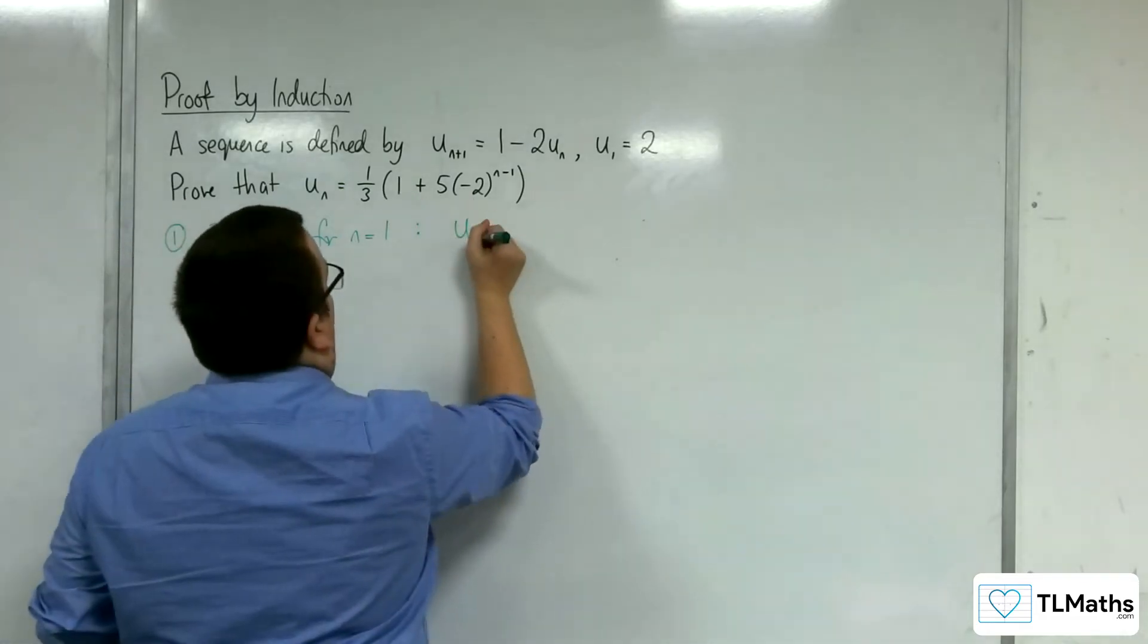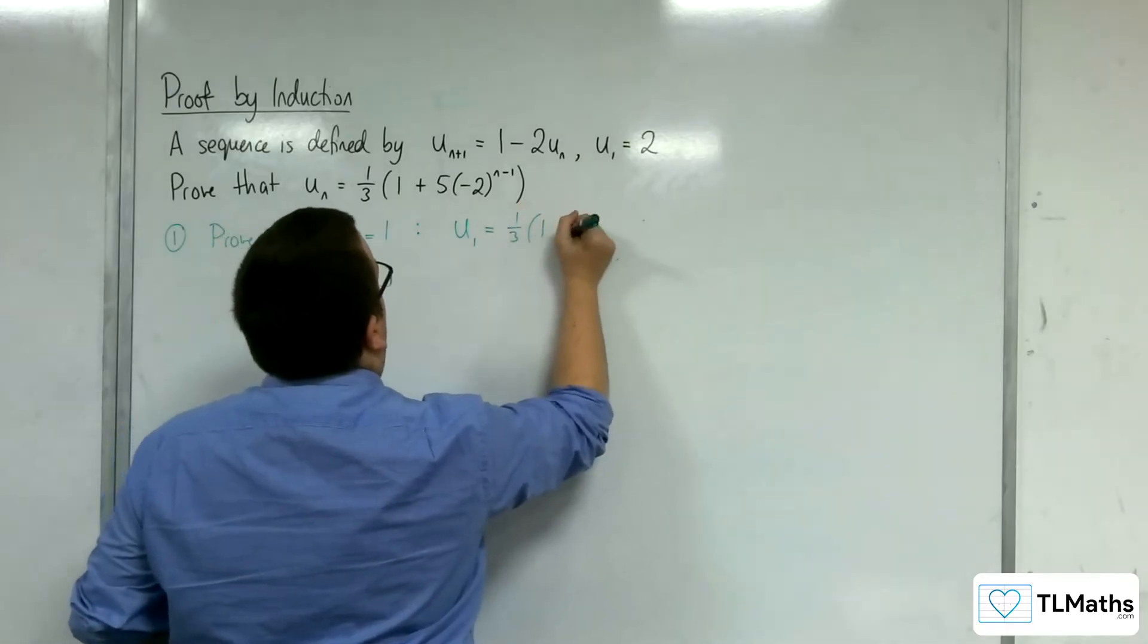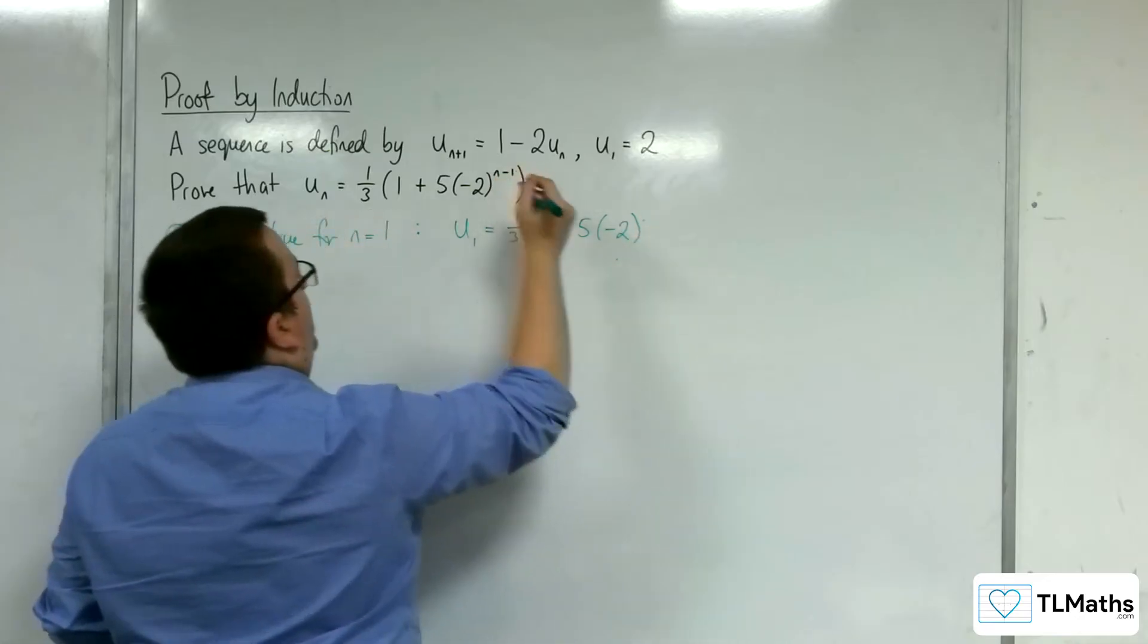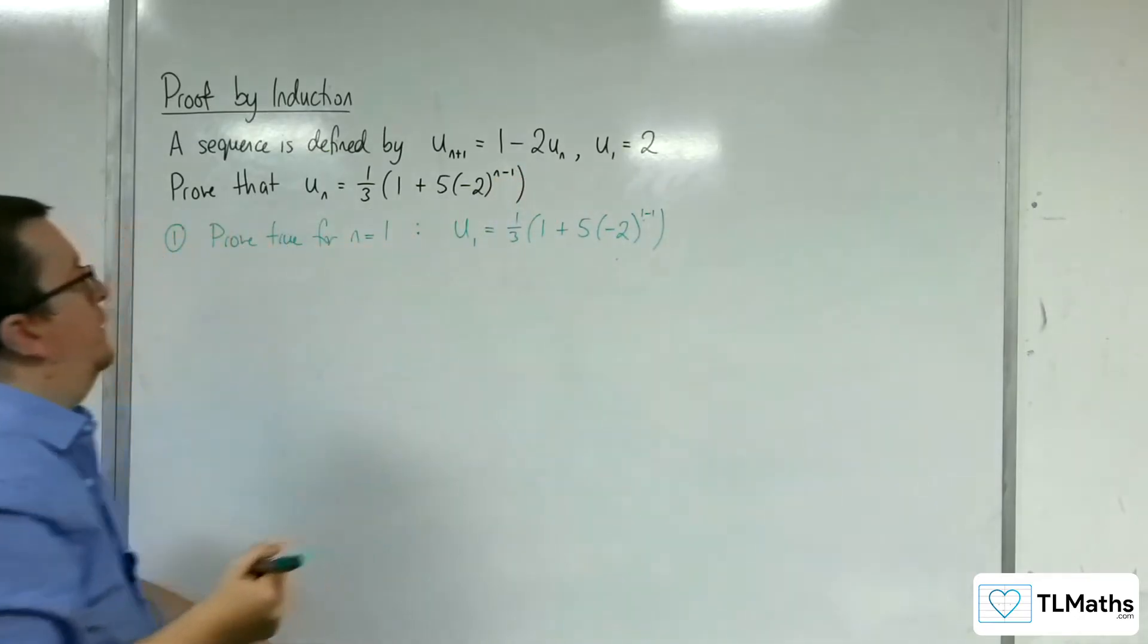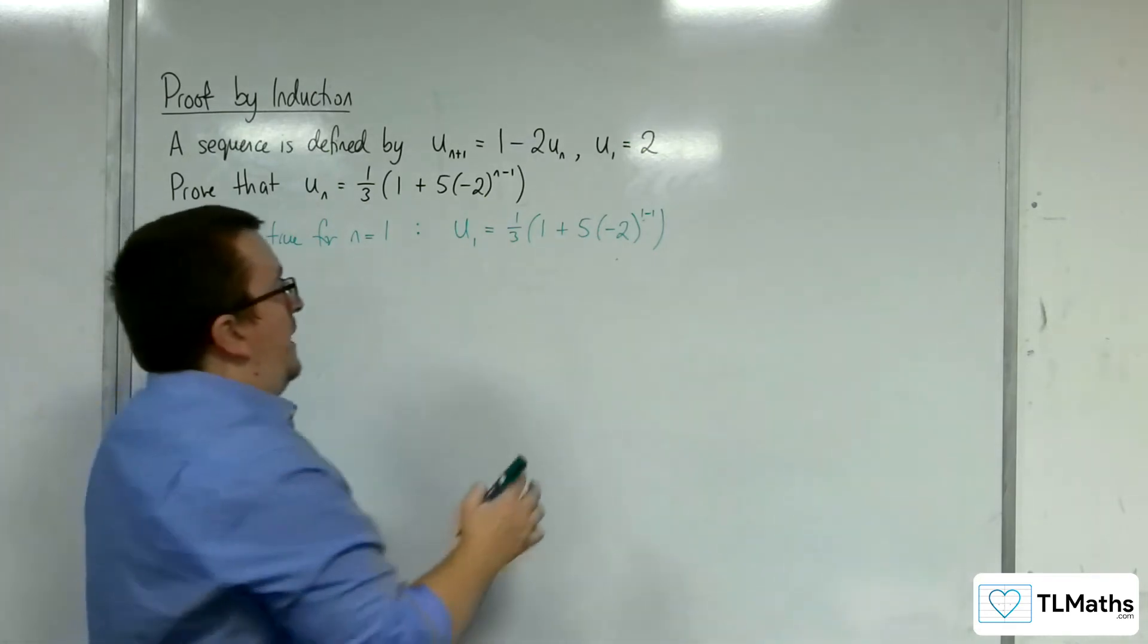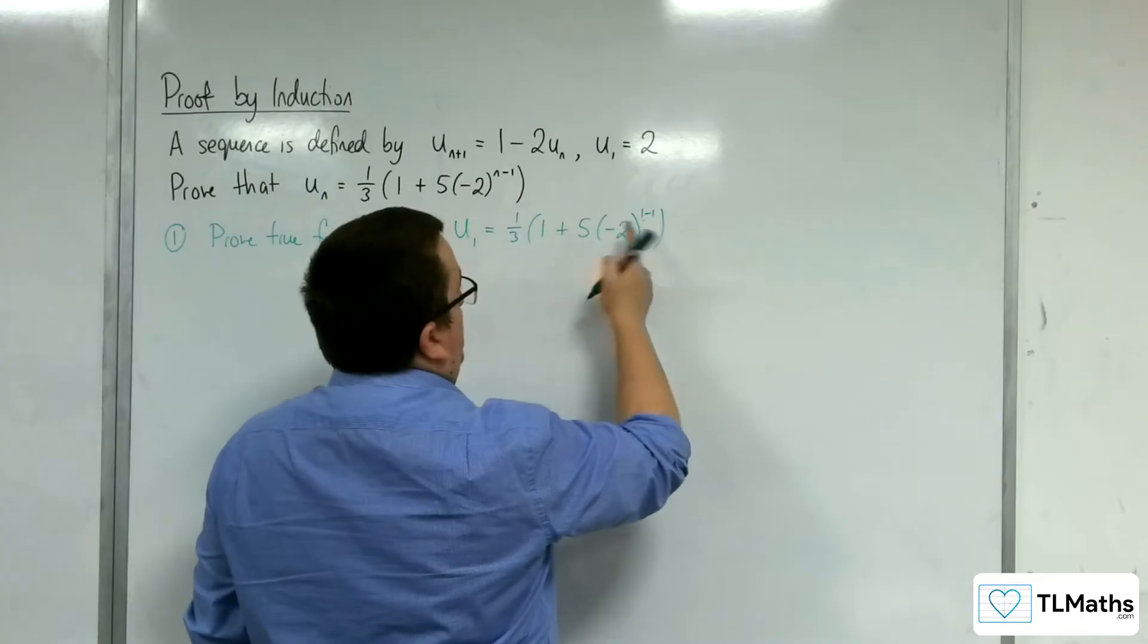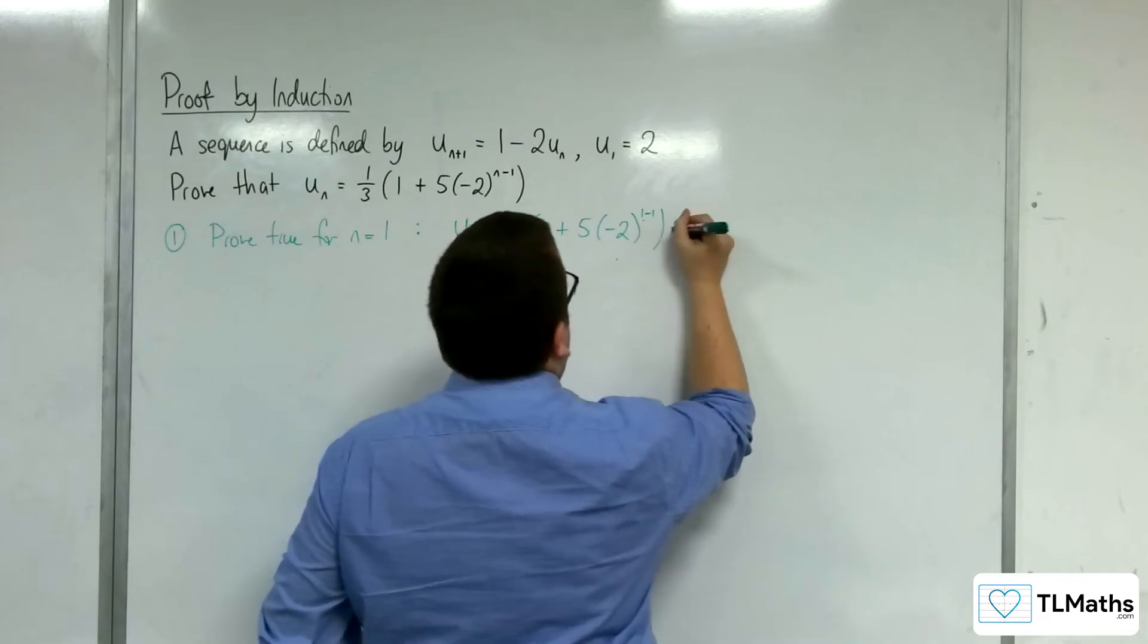So u_1 is equal to one third of 1 plus 5 lots of minus 2 to the 1 take away 1. So we have minus 2 to the 0, which is 1, times by 5. So we've got one third of 1 plus 5, so one third times 6,